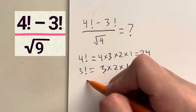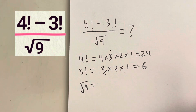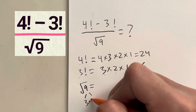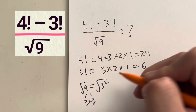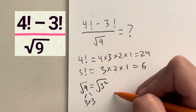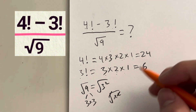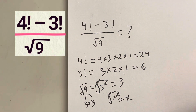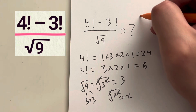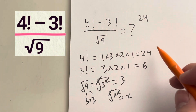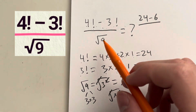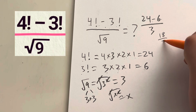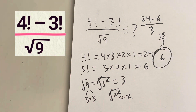We also have the square root of 9. To evaluate a square root, figure out what number multiplied by itself gives you 9 — that's 3, since 3 times 3 equals 9. The square root and the square cancel out, giving you 3. So simplifying everything: 4 factorial is 24, minus 3 factorial which is 6, all divided by the square root of 9 which is 3. 24 minus 6 gives us 18, and 18 divided by 3 gives a final answer of 6.